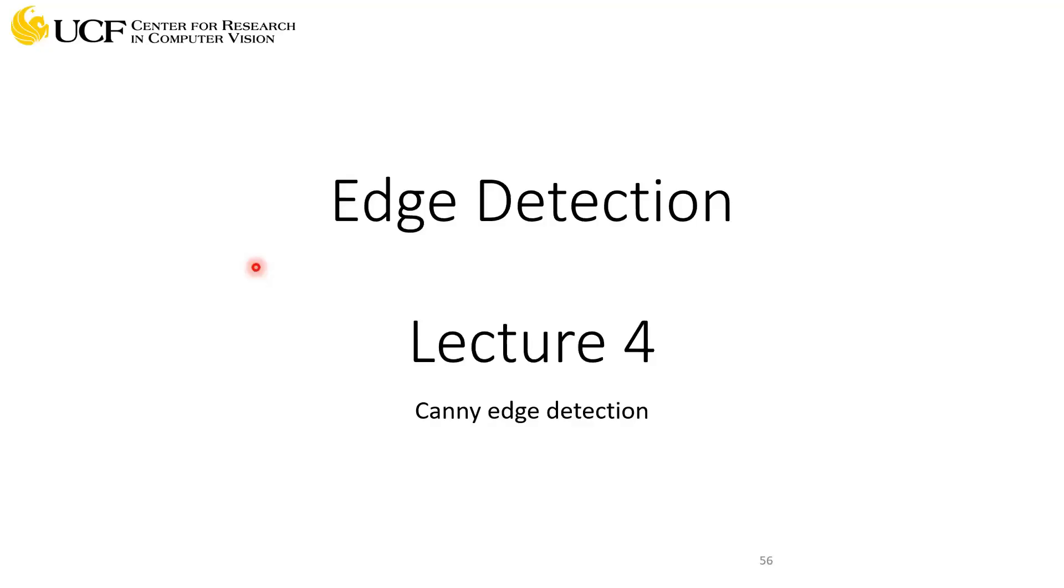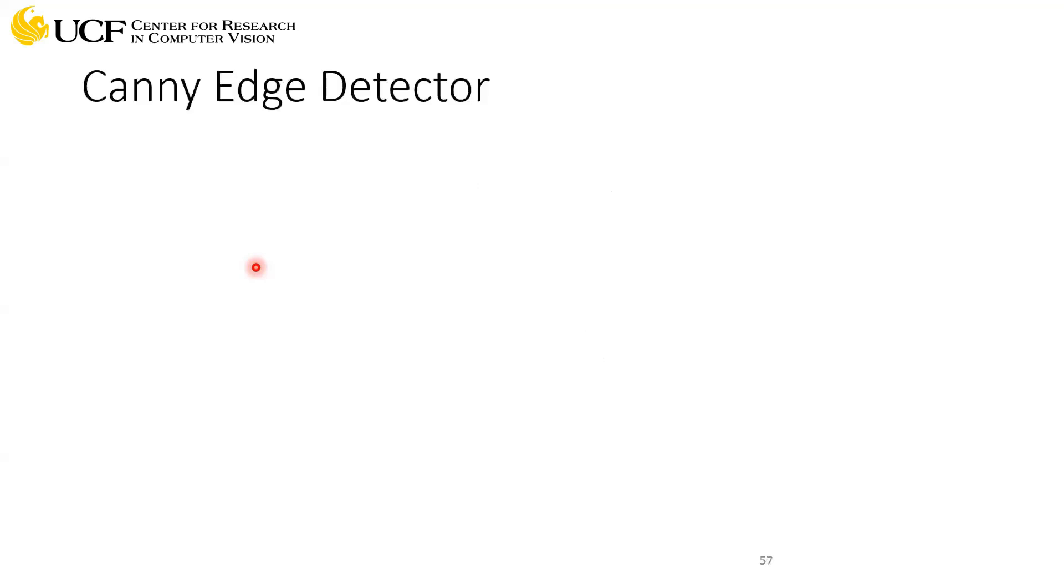Okay, so the next part of this lecture is Canny edge detection. Let's quickly go over the steps we have in this edge detector. Same as the previous algorithms, we first smooth the image and again we are using Gaussian filter here.